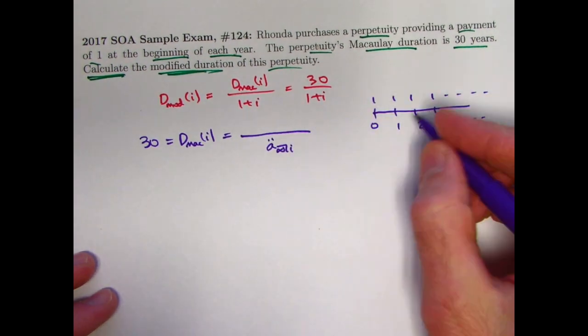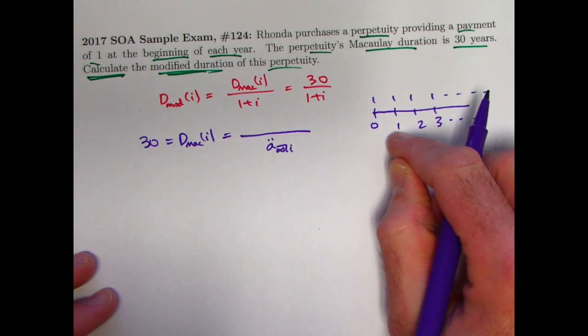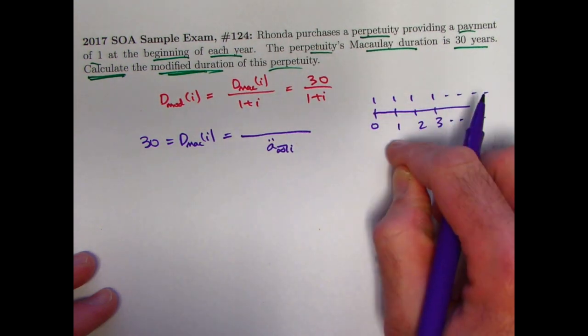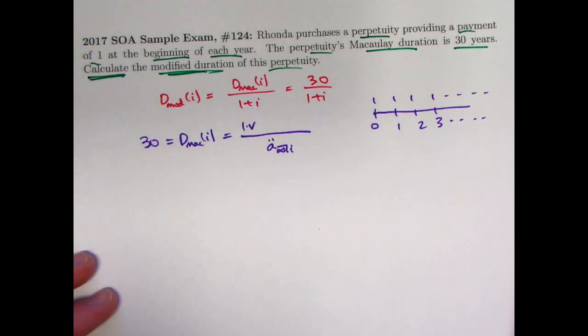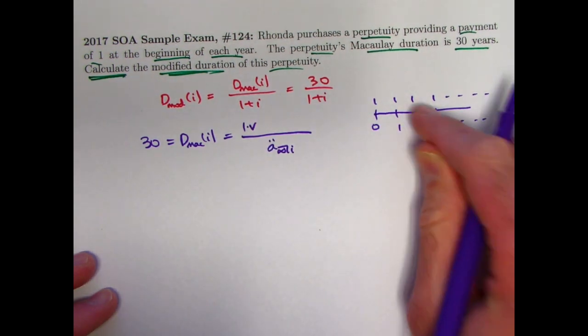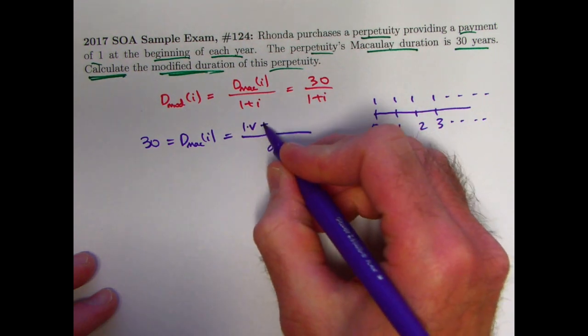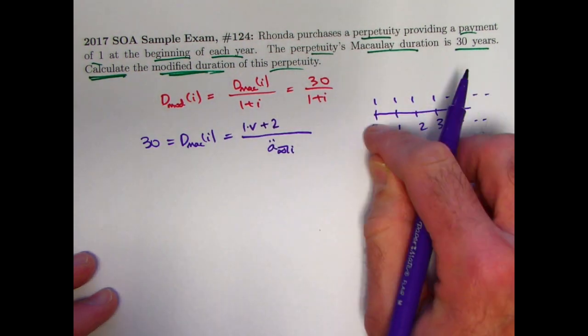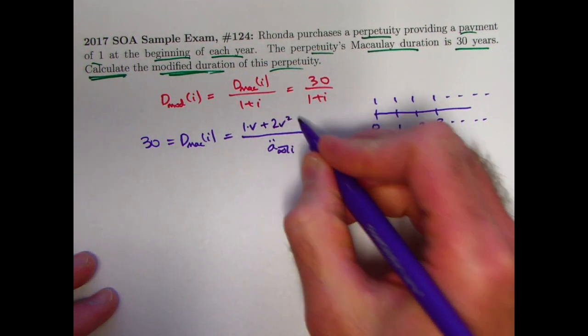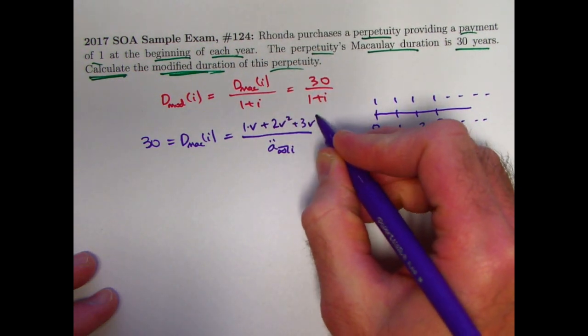The other terms are going to have a payment of 1 at time 1, giving us a value of 1 times the present value of that, which would be 1 times V. Then a payment of 1 at time 2 is going to give us 2 times the present value of that payment at time 0, which would be V squared. Then plus 3 V cubed, etc.